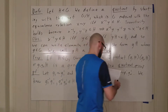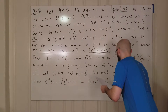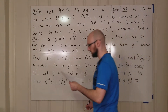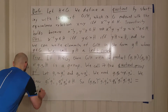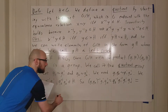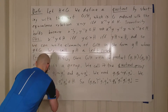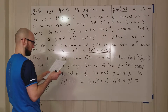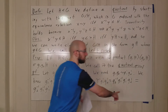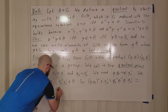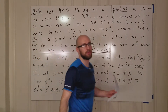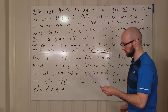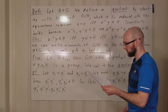This equals g2 inverse g1 inverse g1 prime g2 prime. We can write this as g2 inverse (g1 inverse g1 prime) g2 times g2 inverse g2 prime, inserting g2 times g2 inverse — which equals e — in front of g2 prime. We can always insert e wherever we want.